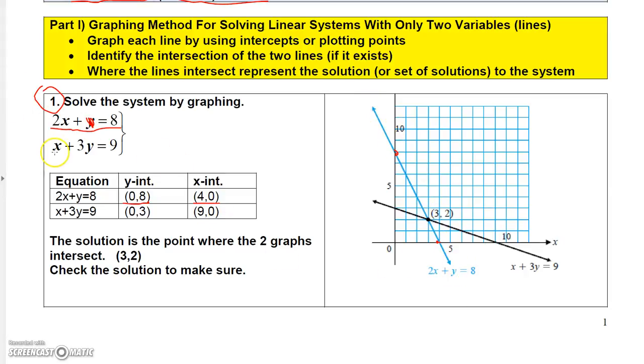The second equation, if x is 0, you can solve for y, 3y equals 9, so y would be 3. And then if you let y equal 0 and solve for x, it will make this term disappear, and then you'll get x equals 9. And so that one goes through 0, 3, which is right here, and 9, 0, which is over here. And then when you draw the line through there, you get that line.